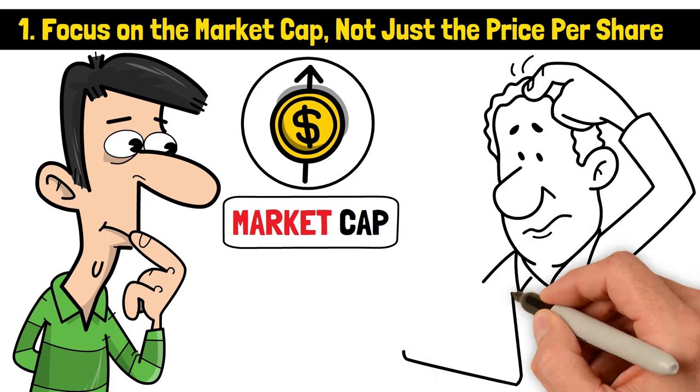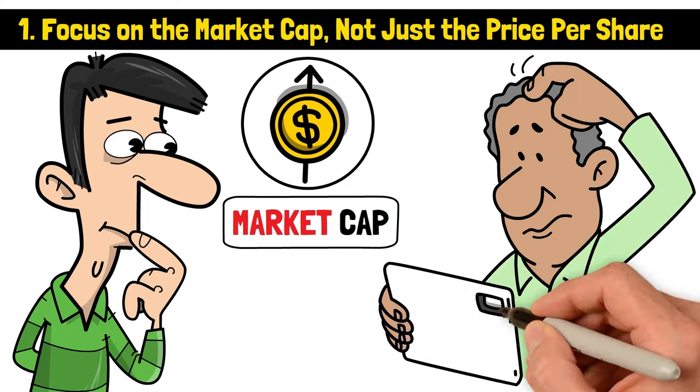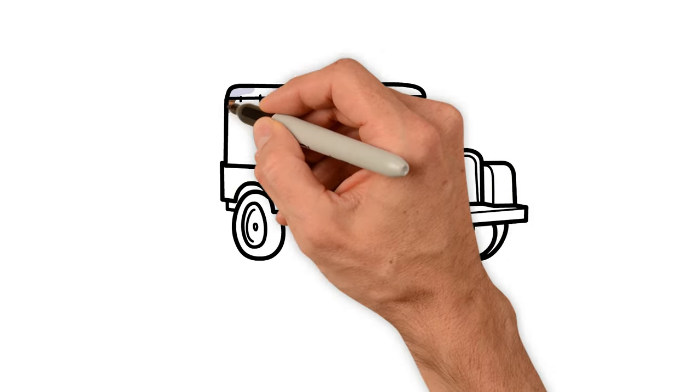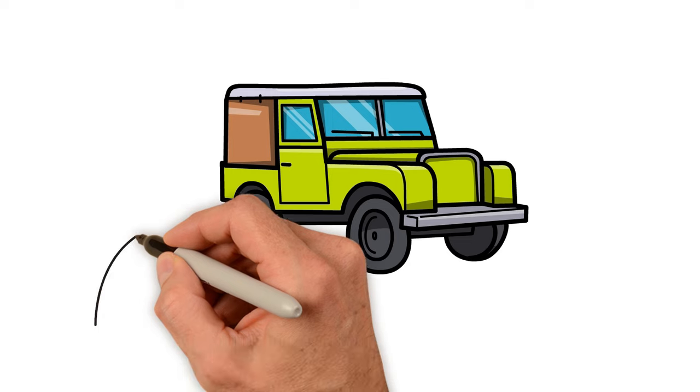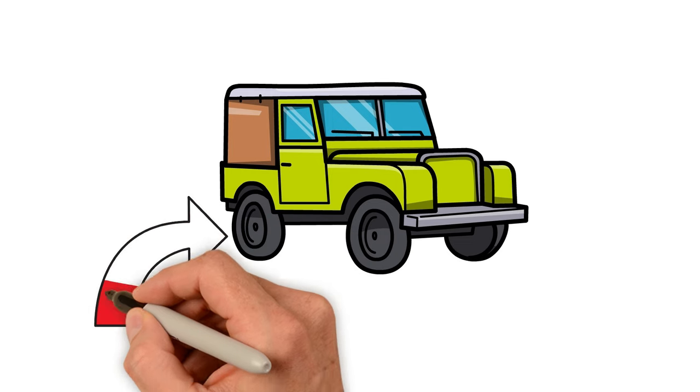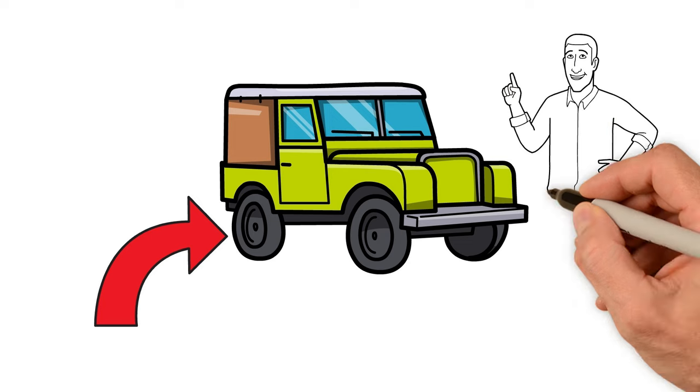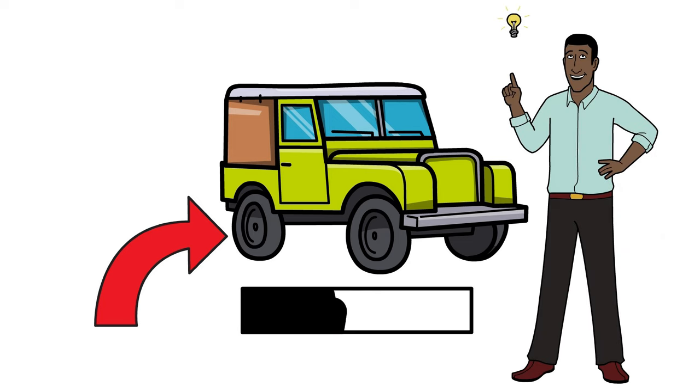I know it's a bit of a head-scratcher. Let's try to understand it with an example. Imagine you're at a car dealership. You wouldn't just look at the price of a tire and decide to buy the car based on that, right? You'd want to know the total price of the car. The same logic applies here.